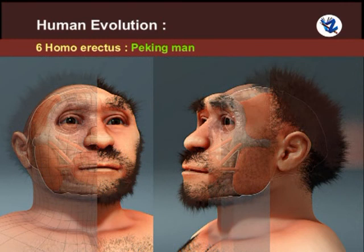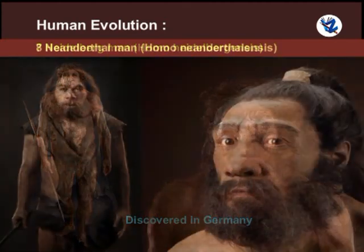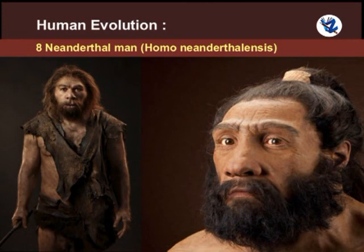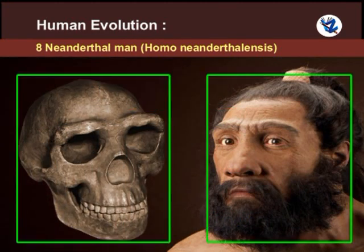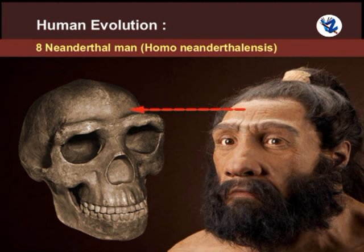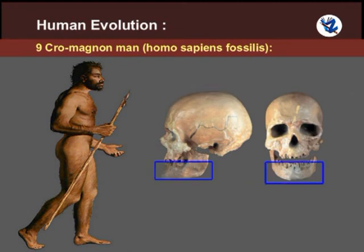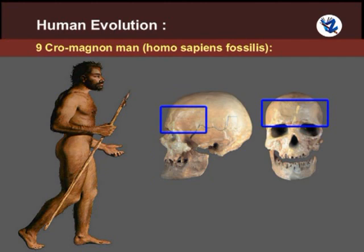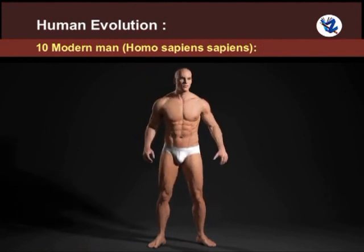Heidelberg man was discovered in Germany and was an ancestor to Neanderthal man. Neanderthal man: Its first fossil was collected from Neanderthal valley in Germany. These were heavily built and short, with prominent brow ridges, thick skull bones, a low slanting forehead and a deep jaw with no chin. Cro-Magnon man was discovered in France; they were about 180 cm in height with a large skull, rounded forehead, distinct chin, narrow nose, thin eyebrow ridges and a broad face. Modern man includes all the human beings existing today on the Earth.